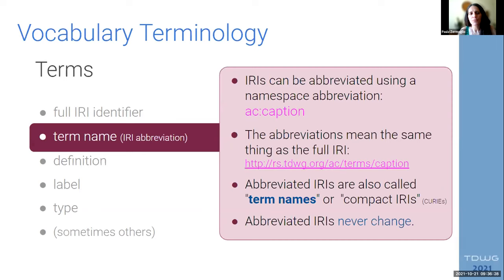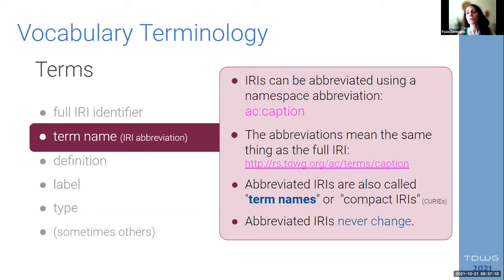Another characteristic of terms is what we call term names. Term names are abbreviations of that IRI, because those IRIs can be very long and very difficult to understand. IRIs can be abbreviated using the namespace, giving us an abbreviation that we can more easily read, but they mean the same thing as the full IRI. So full IRIs and term names — that is, abbreviated IRIs — never change.